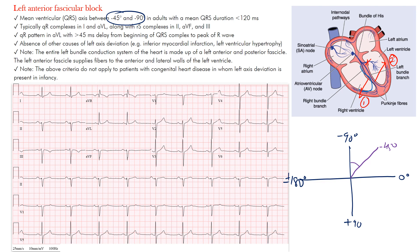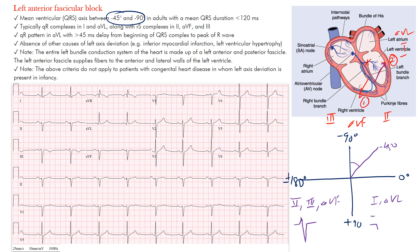How does this appear on the EKG? We have inferior leads II, III, and aVF, and then leads I and aVL. The first vector is depolarizing toward the inferior leads, so you'll see an upward deflection in II, III, and aVF. But the second, more dominant vector is going away from those inferior leads, producing a negative deflection, while going toward leads I and aVL, producing a positive upstroke there.